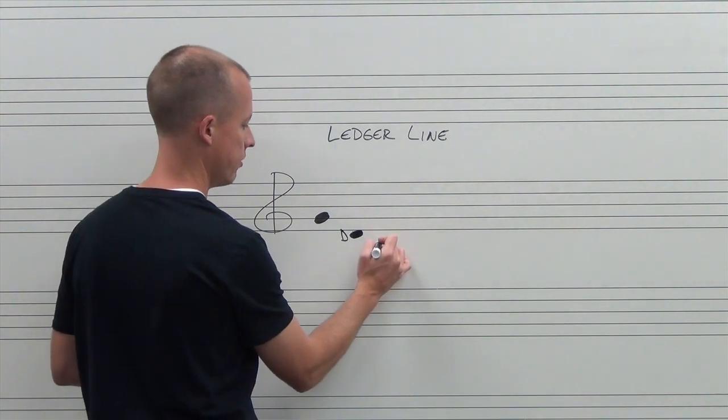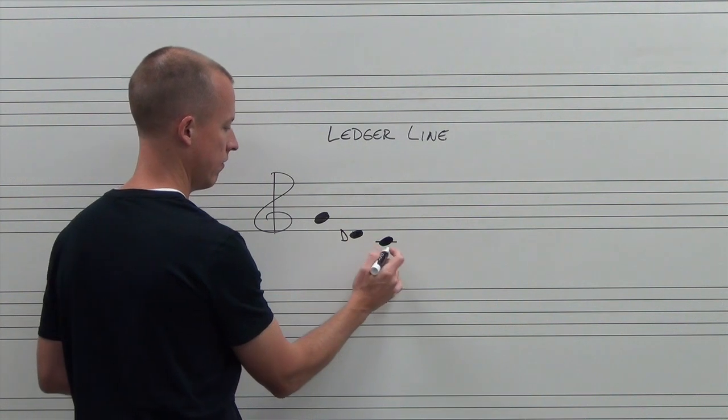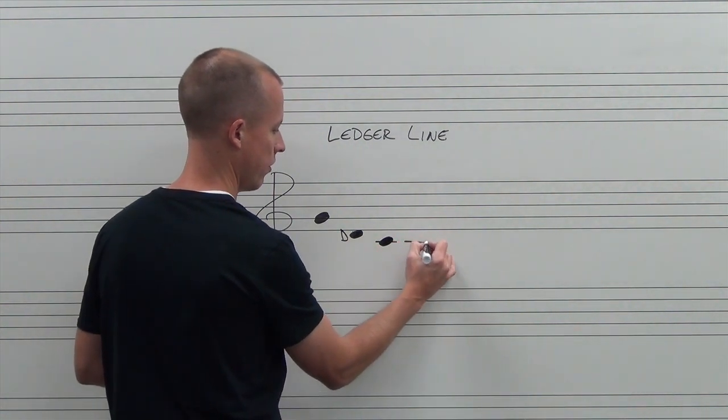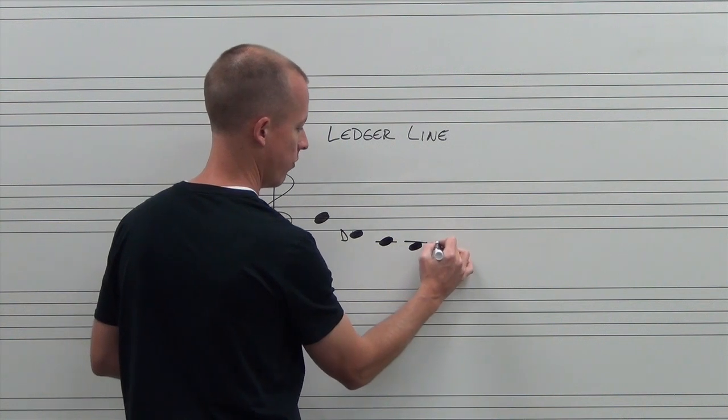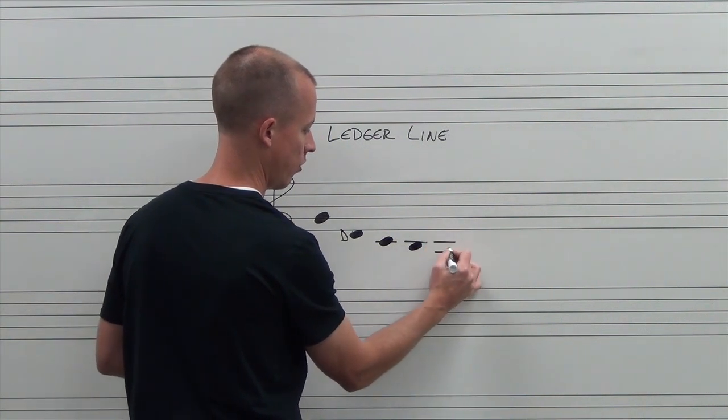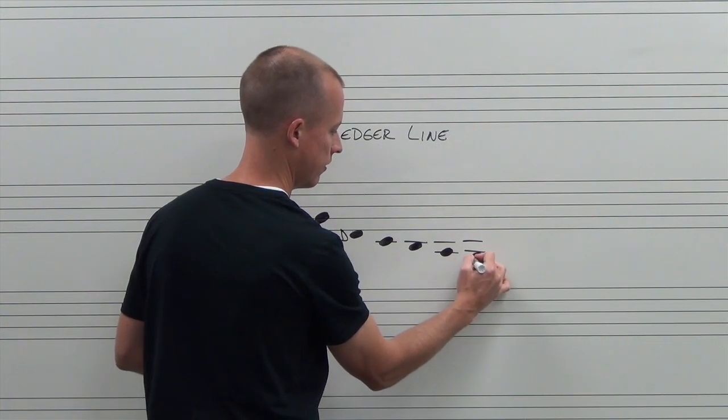To go lower than that, I need to make a ledger line. Place this note across this first ledger line. And then I can make another note lower by placing it below the first ledger line. And then we need to go, if we need to go lower, we can do a second ledger line and below the second ledger line.